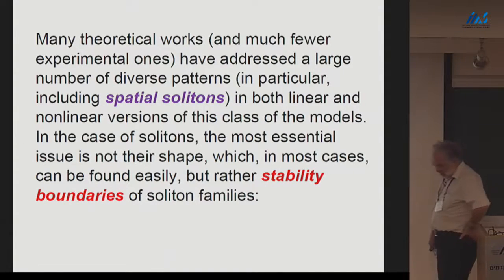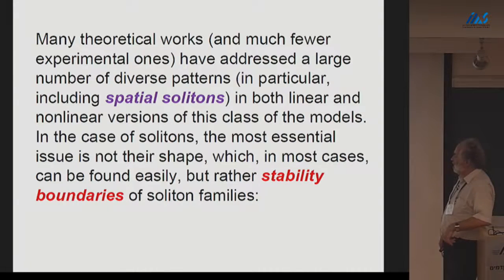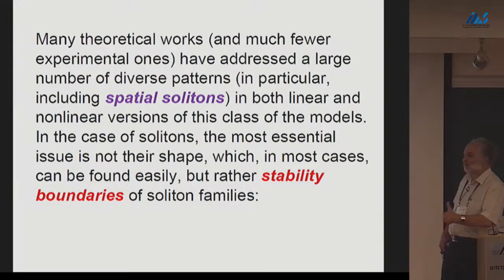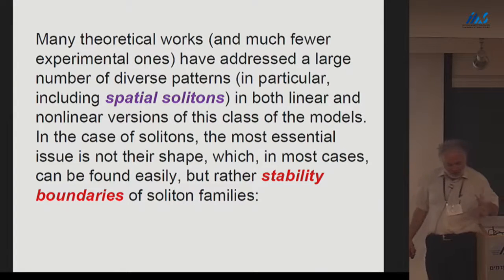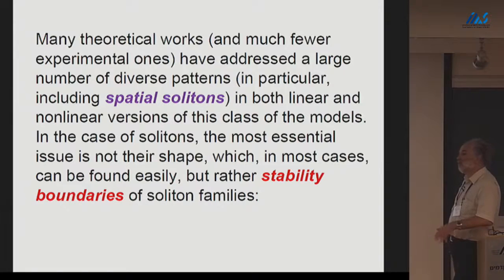In the analysis of solitons, the most challenging problem is not finding stationary solitons — because in some cases they can be exactly the same as in respective traditional conservative models without loss and gain. The solution for the soliton may be found in a form completely tantamount to its counterpart in the conservative model. The more challenging problem is usually the analysis of stability, which may be completely different from that of conservative counterparts even when the formal shape of the solitons is the same.